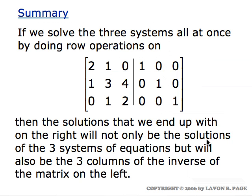When you put that all together, it tells us that if we started with the coefficient matrix augmented by the identity matrix — which is equivalent to solving all three systems at the same time — what we would get would be the first column of the inverse, the second column of the inverse, and the third column of the inverse. And that's exactly a verification of the method we used to find the inverse: perform the row operations, and the inverse matrix appears on the right. We're seeing that this method is completely consistent with what we're observing about solving multiple systems of equations all at the same time.